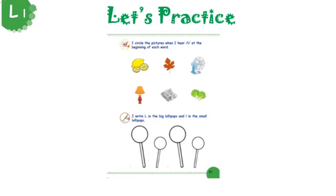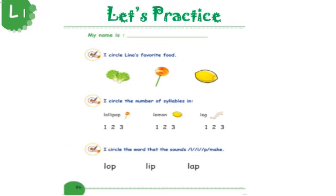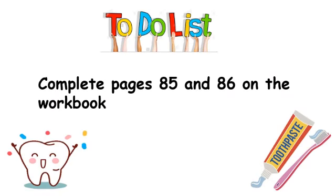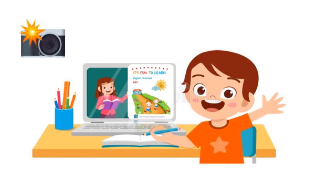Open your workbooks, page 85, and circle the pictures where you hear L at the beginning of each word. Then write the capital L in the big lollipops and the small L in the small lollipops. Then open page 86 — don't forget to write your full name. Circle Lina's favorite food, then circle the number of syllables in each word, and circle the word that the sounds L, E, P make. Your task for today is to complete pages 85 and 86 in your workbook. I am waiting for your work, kids. Goodbye now.